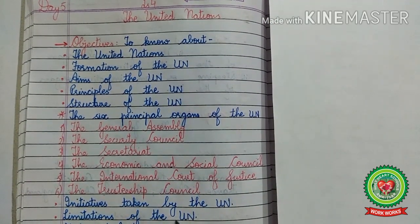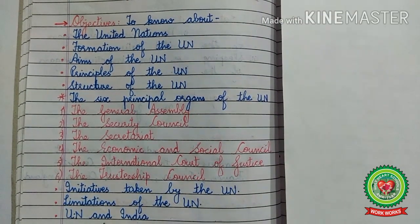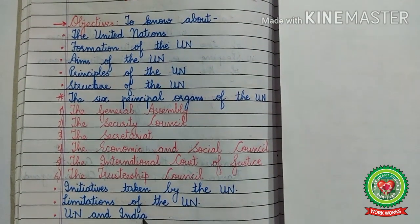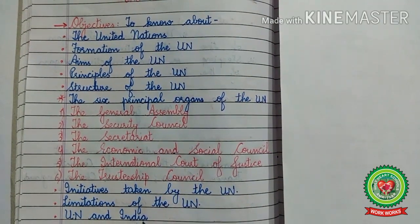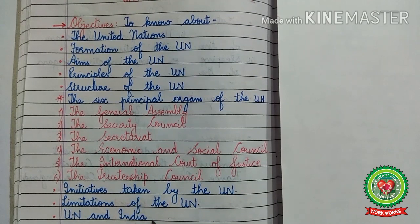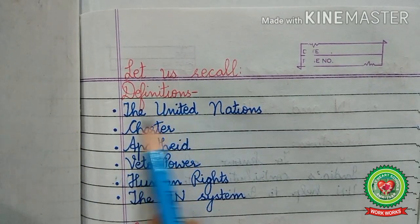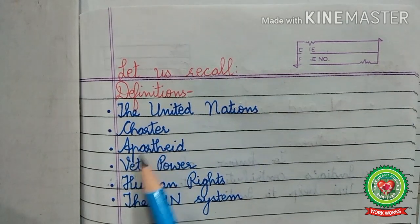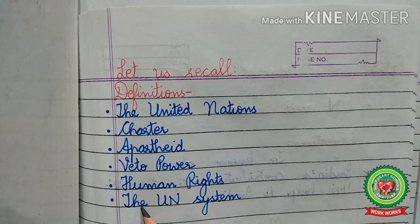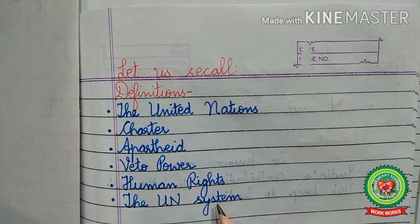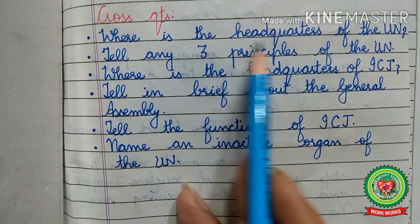We had also learnt about the initiatives taken by the UN and the limitations of the UN. Today we are going to discuss UN and India. Before discussing this topic, let us recall the definitions and terms related to the previous topic: the United Nations Charter, apartheid, veto power, human rights, and the UN system.